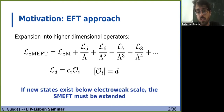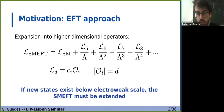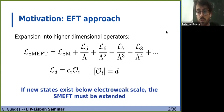The high energy effects are parameterized into higher dimensional operators, which come suppressed by powers of the high energy scale lambda. For higher dimensions, we get further suppression, so in principle they will be less important. There's been a lot of work done in the Standard Model Effective Field Theory, with the operators of dimension six being completely constructed and classified, and even the renormalization group equations all being calculated. More recently, there's also been some work done up to dimension eight.